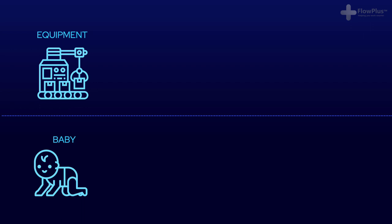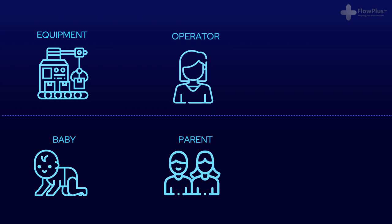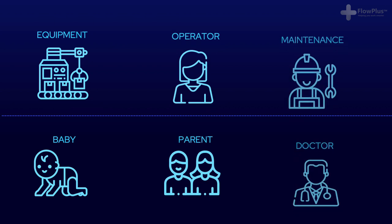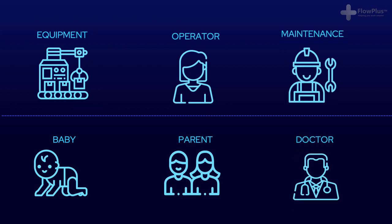A rather strange but effective analogy for looking at this new operator responsibility for equipment can be seen in the way that we care for a baby. Please think of the baby like the equipment, a parent like an operator, and the doctor as the maintenance department. Just like how a doctor diagnoses and fixes problems with people, whether that be a broken bone or a torn ligament, maintenance members fix problems with machines, whether that be a broken gear or worn out parts.